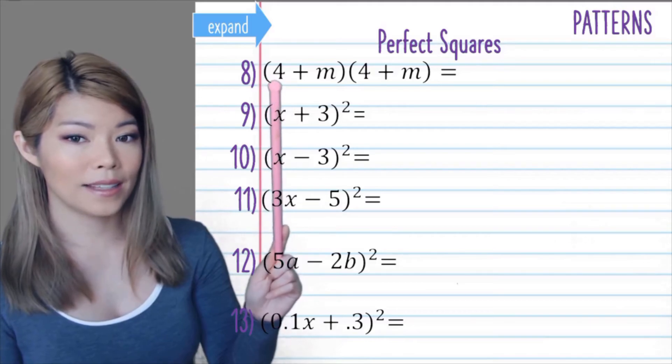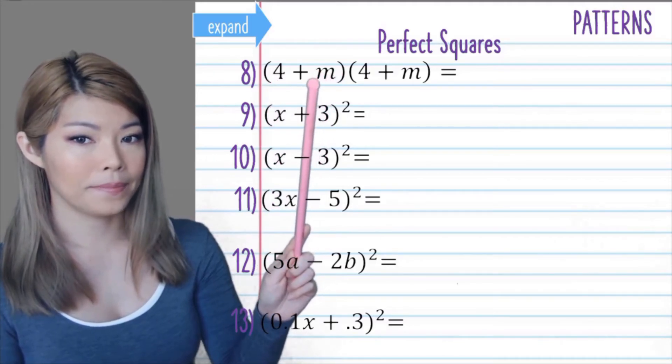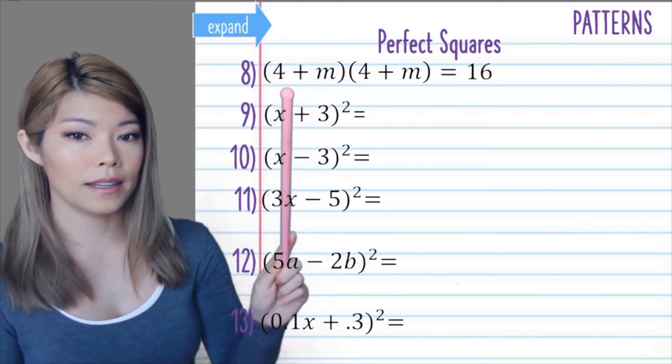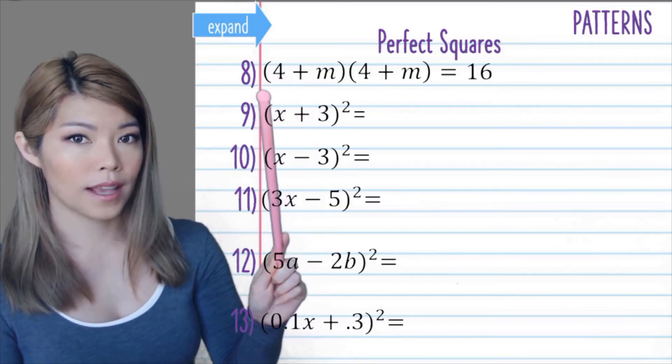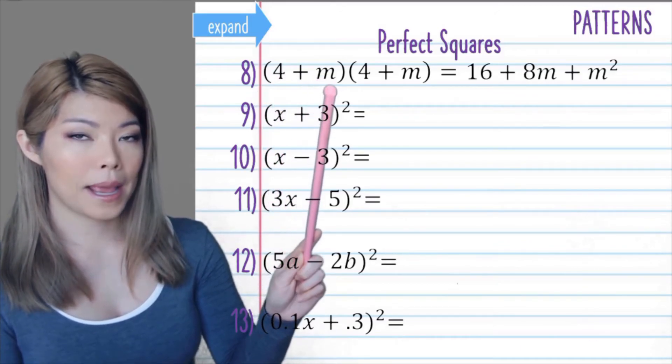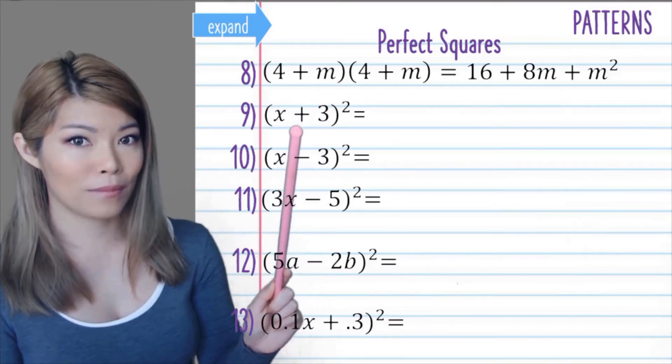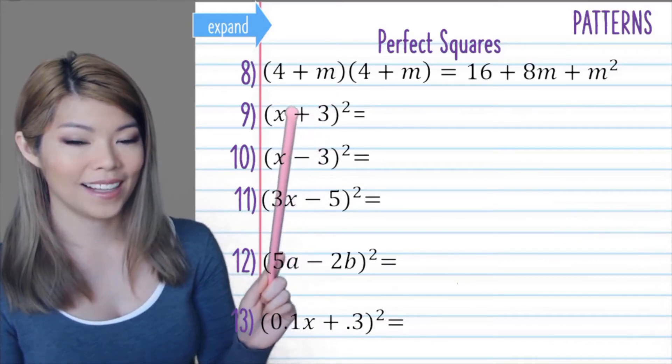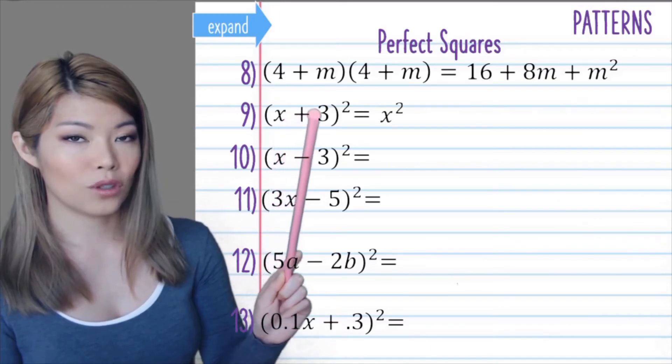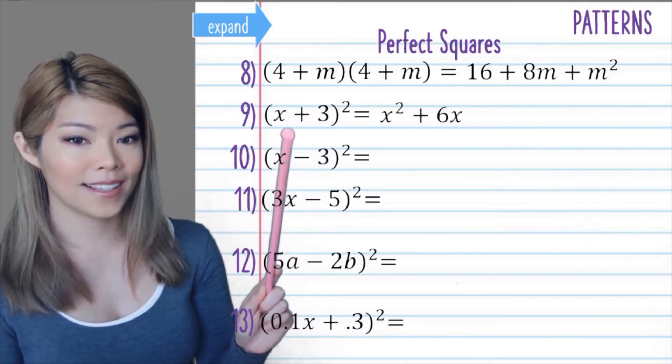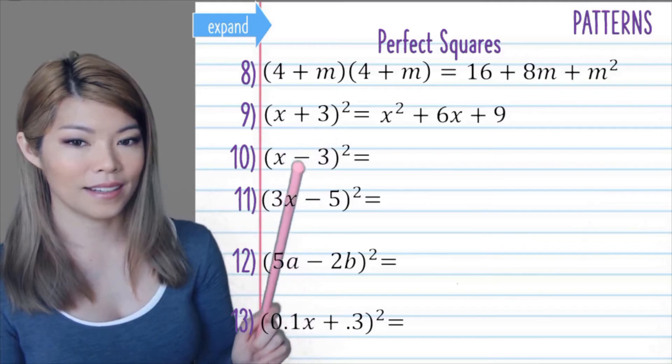For question 8, a is 4 and b is m. So 4 squared is 16 plus 2 times 4 is 8m plus m squared. Second one, this is like the first example, so you should be able to work it out. So we have x squared plus 2 times 3 times x is 6x plus 9.